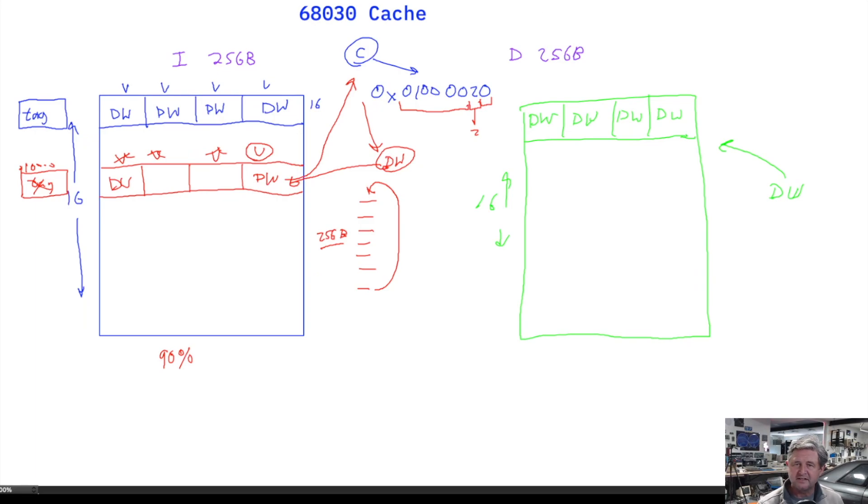But writes are a unique thing. The 68030 has a configuration register in the cache control register with a bit that you can turn on or off that sets a mode called write allocate. It's an interesting idea in that it defaults to zero. So by default, this write allocate mode is disabled.